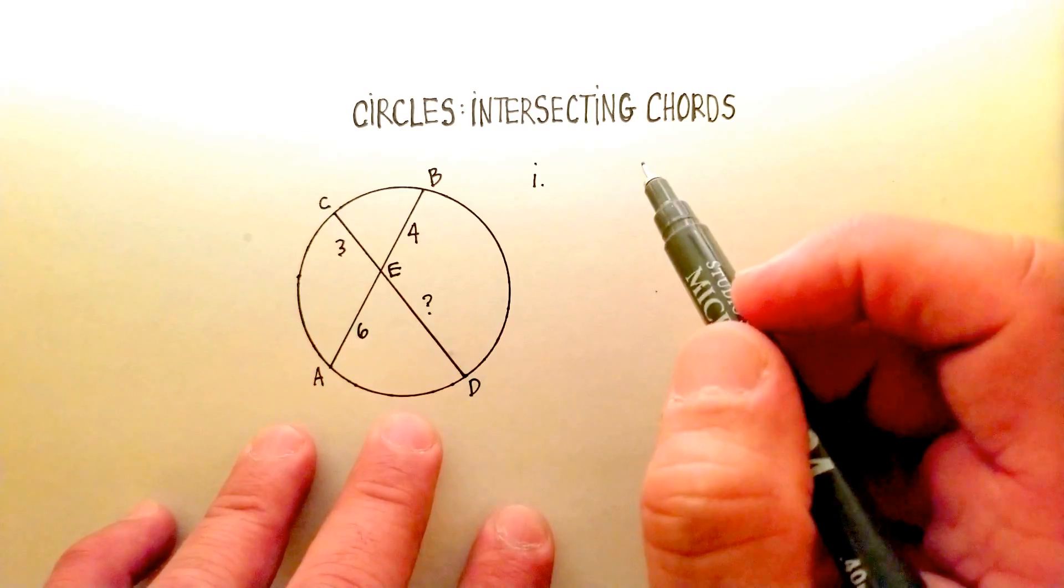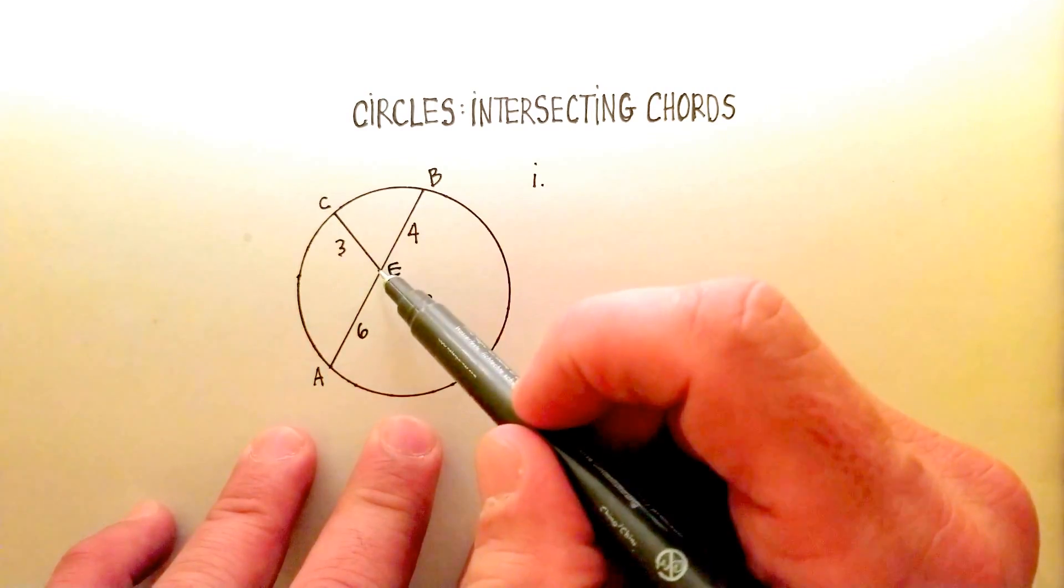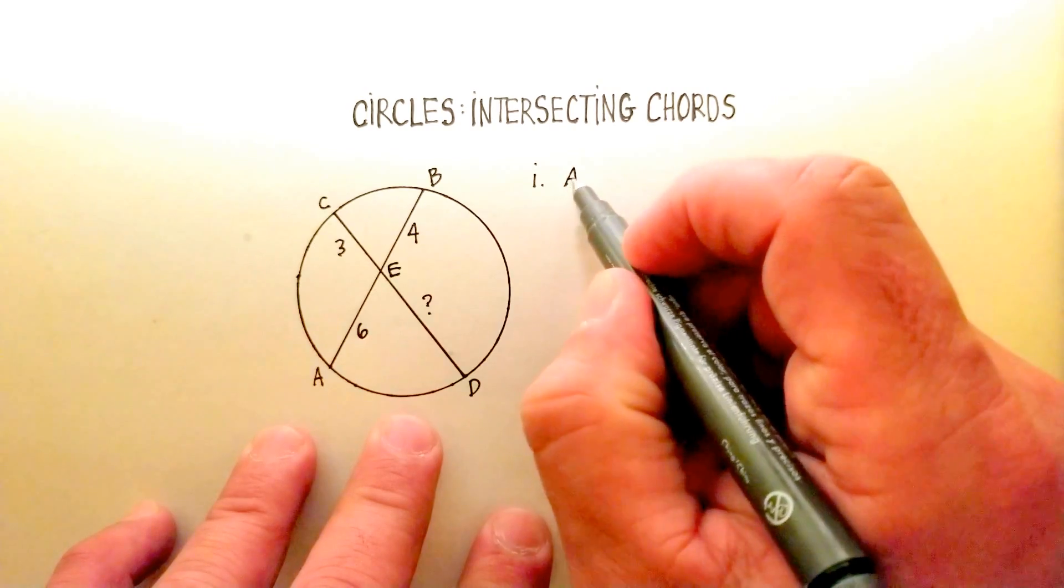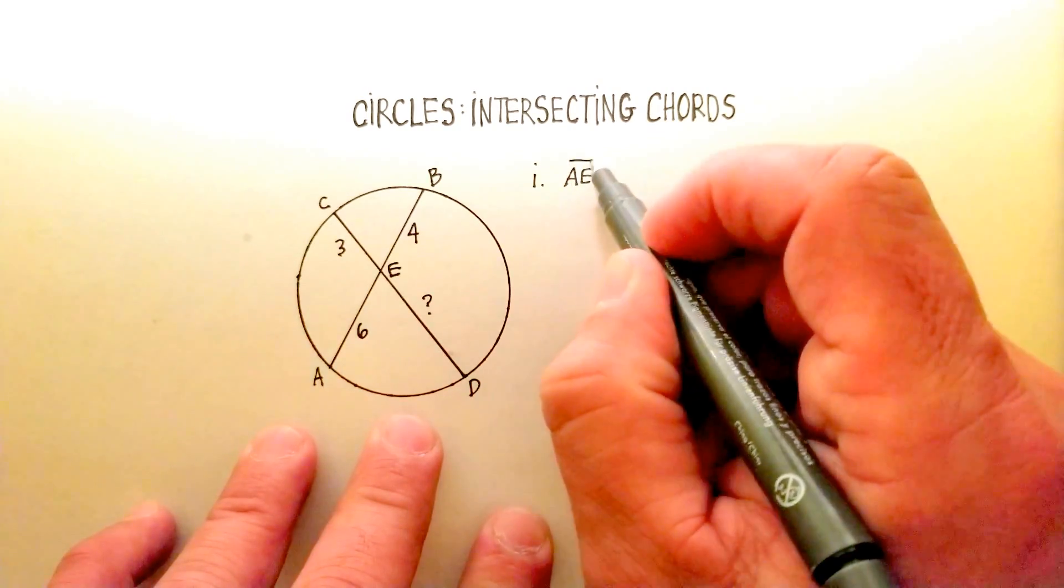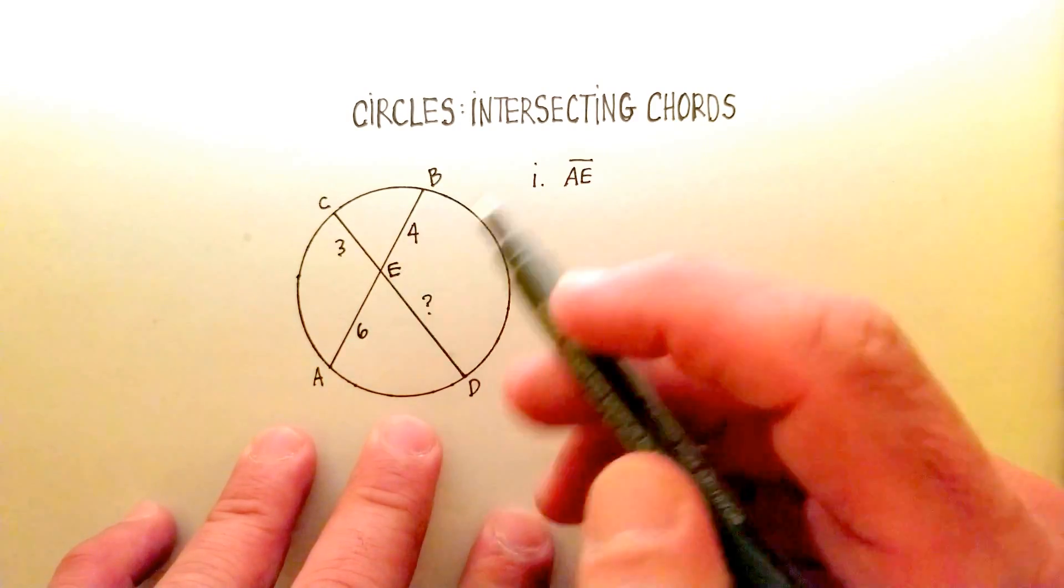If you were to multiply, in this case, line segment AE, and remember, line segment is written like that, times the rest of the chord, which is line segment BE,